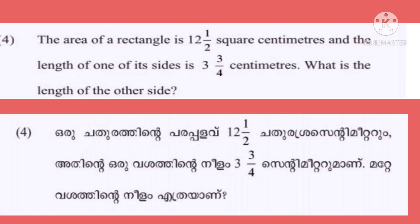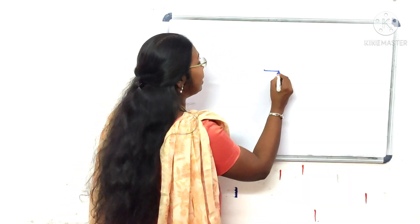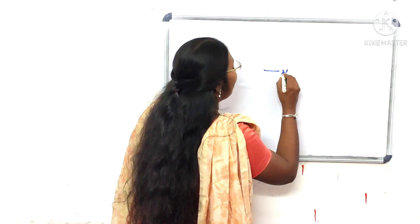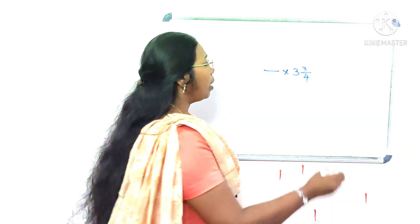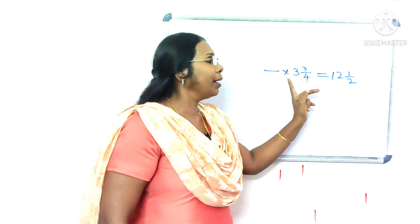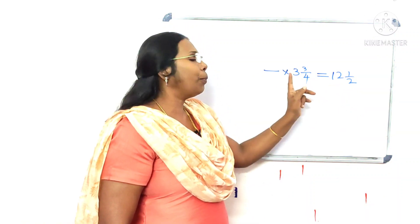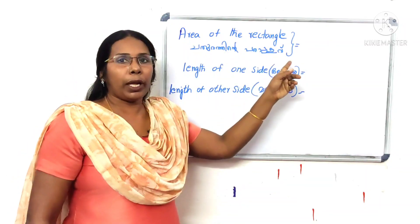The area of a rectangle is 12 and a half square centimetres and the length of one of its sides is 3 and 3 quarter centimetres. What is the length of the other side? We have to do this as a step. The area of the rectangle.